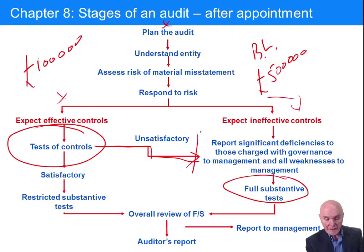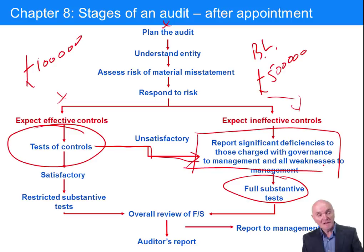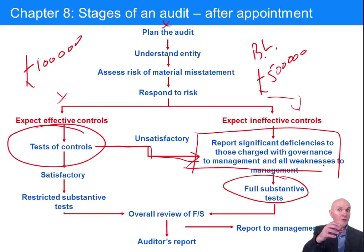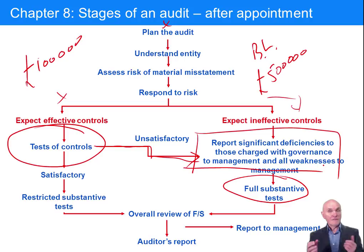What the auditor will do is report to management on deficiencies in the internal control system — either design deficiencies, or failures by employees not carrying out the controls they were supposed to. This is sometimes called a management letter, where you set out the problem, what could happen as a result, and how to stop it. For example: not authorizing overtime means people could authorize their own, paying too much — the fix is having managers authorize timesheets.